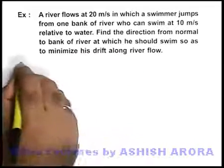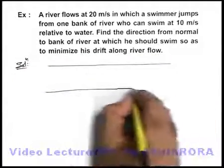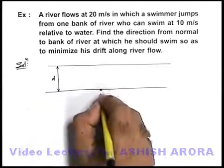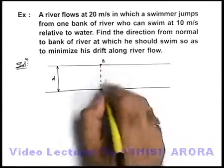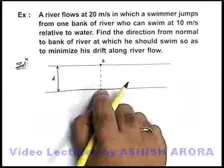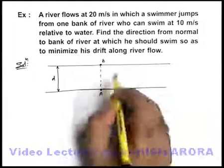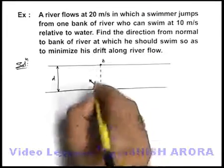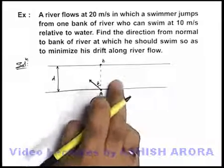Let us first draw the physical situation of this problem. We are given a river of width d. The swimmer starts from point A on one bank; point B is directly opposite to A on the other bank. He wants to swim in such a way that his total drift along the river flow is minimized. To minimize the drift, he will swim in the upstream direction at an angle theta with the normal to the river.